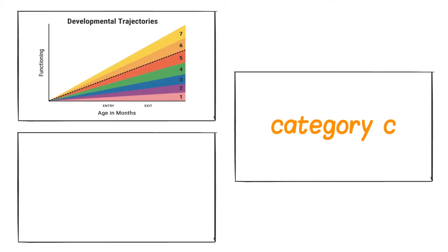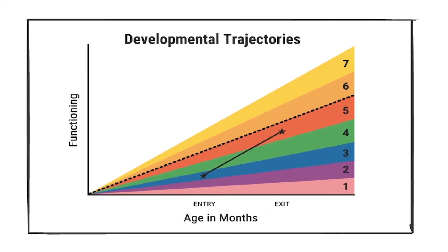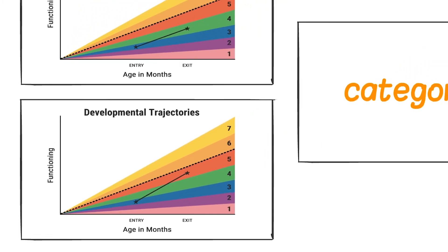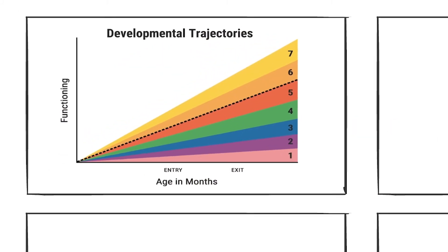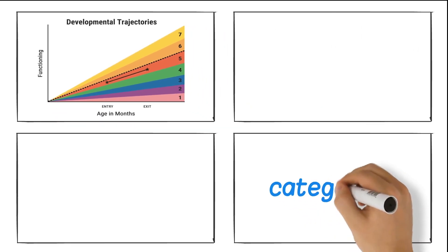Category C applies to a child who showed sufficient improvement in functioning to move to a higher developmental trajectory — a higher rating on the scale — but had not yet achieved age-appropriate functioning when they exited. In contrast, a child who showed improved functioning but did not change developmental trajectories — where the slope of the child's line is not flat but remained within the same trajectory — is an example of category B.